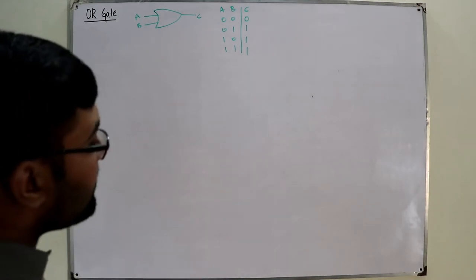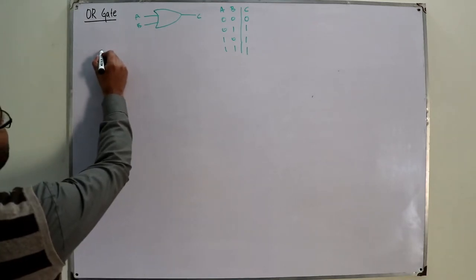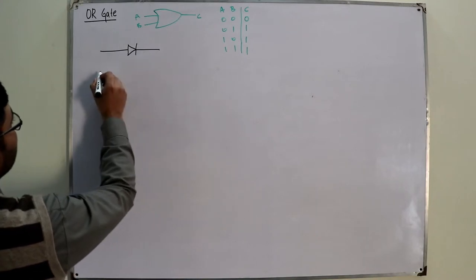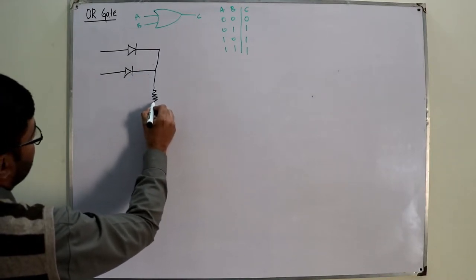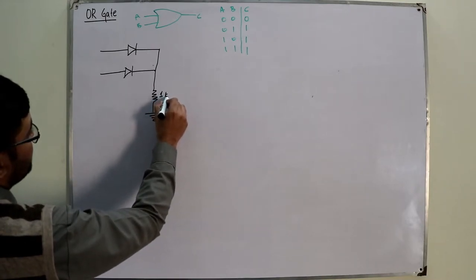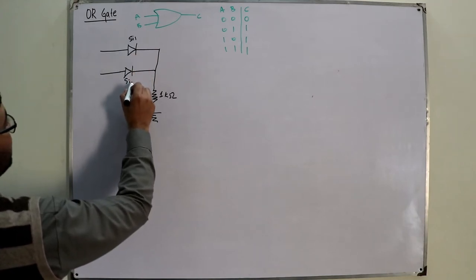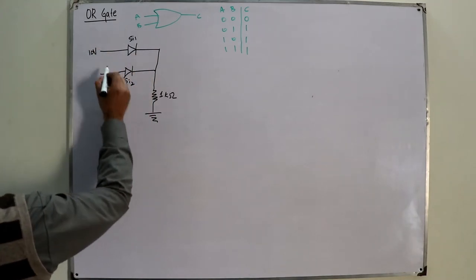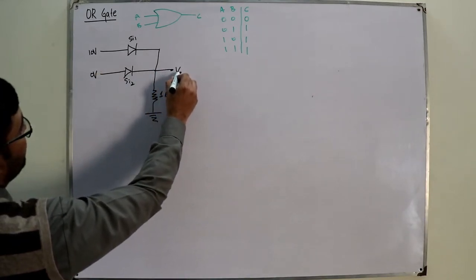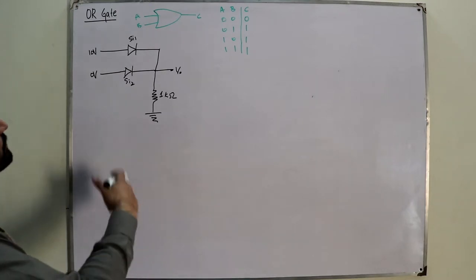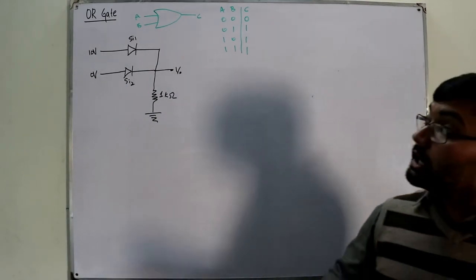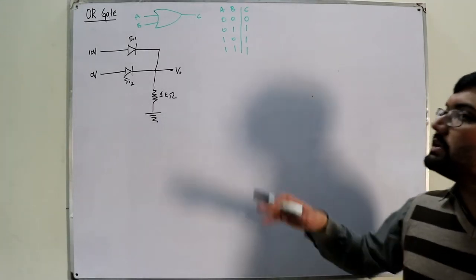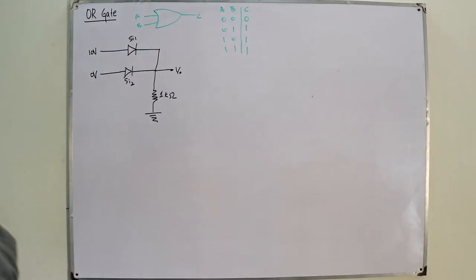Now if we're given a circuitry, considering the circuit from the book: I have a 1 kilo-ohm resistor, silicon diode 1, silicon diode 2. I have plus 10 volts connected at one point, zero volts at another, and my output voltage is V_naught. I have to find the value of V_naught and confirm whether this circuit is working as an OR gate or not. This might not be the basic construction of an OR gate, but we can use it as an example.